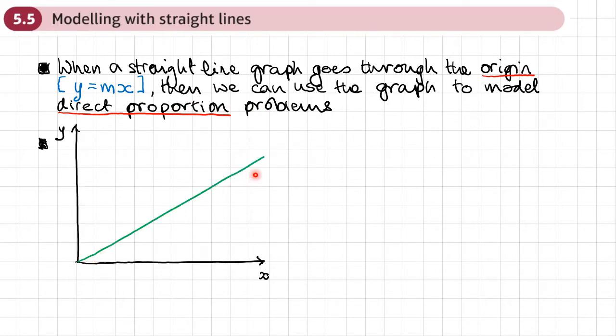Then we can use the graph to model direct proportion problems. So here's a straight line graph that goes through the origin, and the equation of this line would be of the form y equals mx.